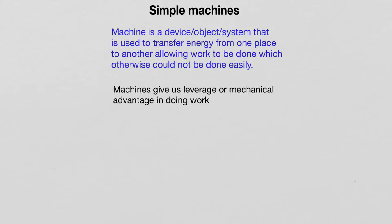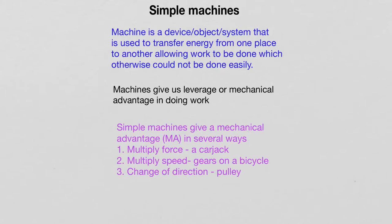Machines give us leverage, also known as mechanical advantage, in doing work. Simple machines give a mechanical advantage, abbreviated MA, in several different ways. For example, they can multiply force — a car jack does that — multiply speed — the gears on a bicycle do that — or change direction, which is done by a pulley system.